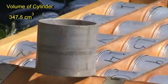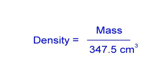The volume of the cylinder is 347.5 cubic centimeters, so we're already halfway there in calculating our bulk density.